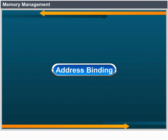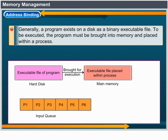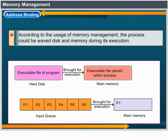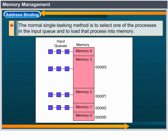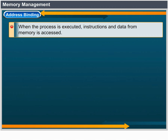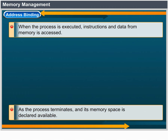Address binding. Usually, a program resides on a disk as a binary executable file. To be executed, the program must be brought into memory and placed within a process. Depending on the memory management in use, the process may be moved between disk and memory during its execution. The processes on disk waiting to be brought into memory form the input queue. The normal procedure is to select one process from the input queue and load it into memory. As the process executes, it accesses instructions and data from memory. Eventually, the process terminates and its memory space is declared available.